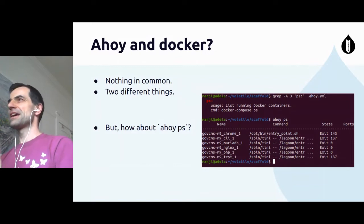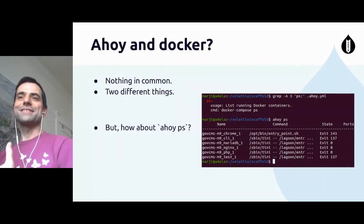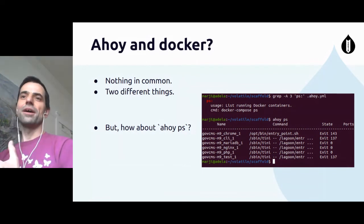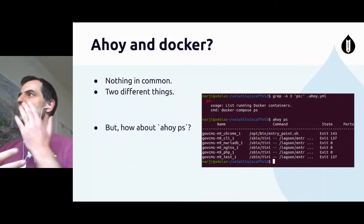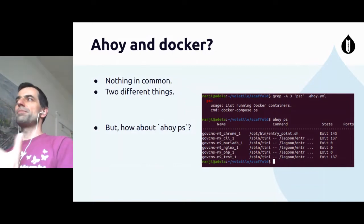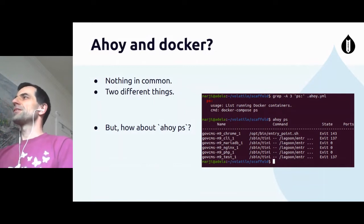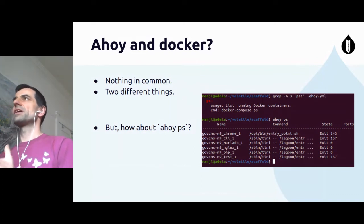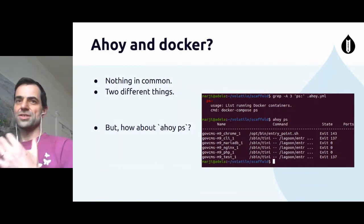Ahoy is just a tool for defining commands in a YAML syntax. If I say 'Ahoy Margie,' it executes this. If I say 'Ahoy Peter,' it executes that. So when you look at the definition of Ahoy PS and the output — how Ahoy PS looks — you can see GovCMS containers there. The definition is the first four lines — it actually runs Docker Compose PS. So when I run Ahoy PS, it executes Docker Compose PS. Ahoy is just a wrapper.